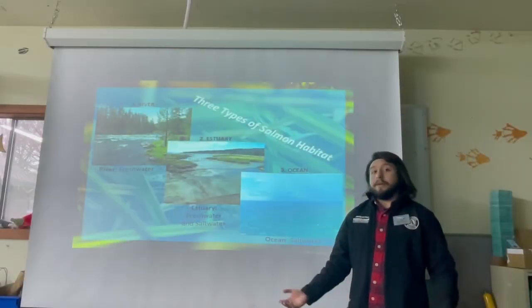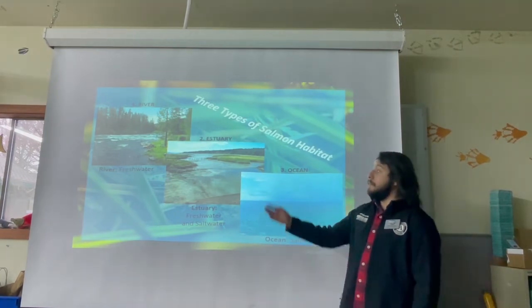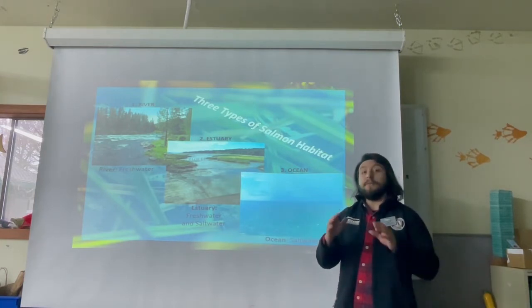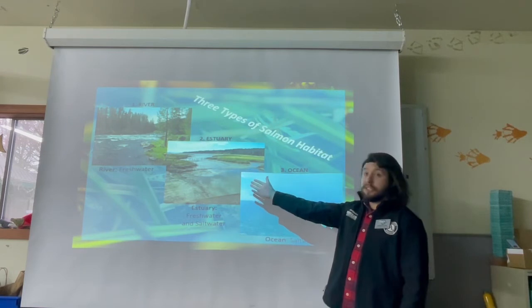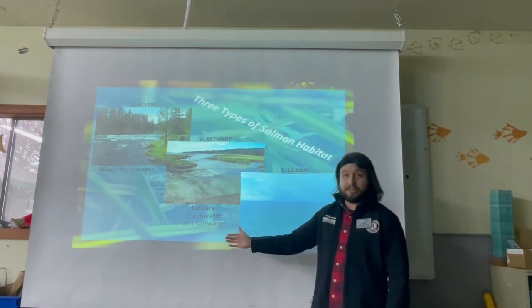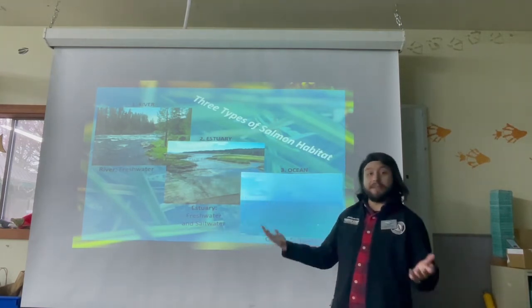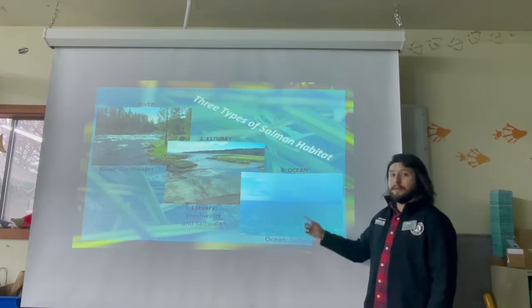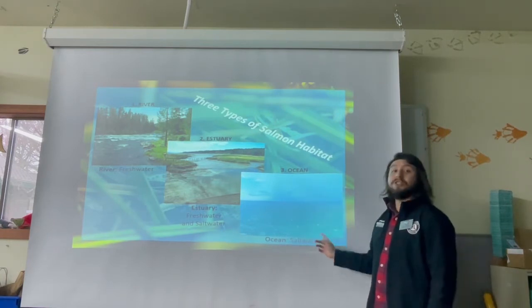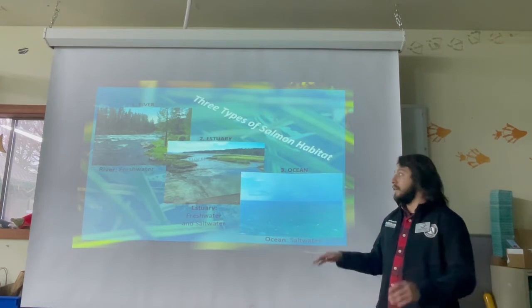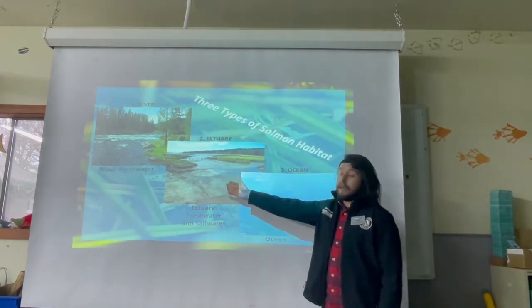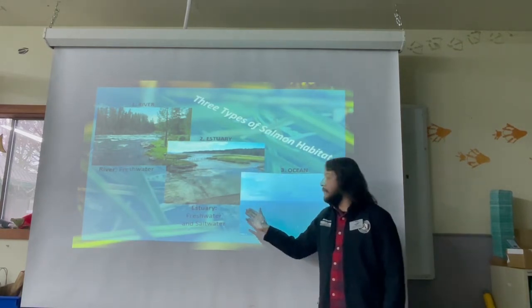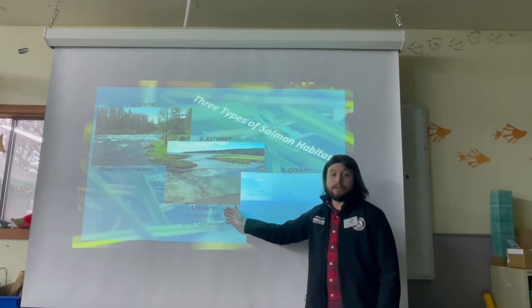Salmon utilize three different habitats. First, rivers — a freshwater system with low salinity, meaning low salt levels. Second, estuaries, which have a brackish system — a mix of fresh and salt water, since estuaries are the in-between section connecting the river and the ocean. Third, the ocean, which of course has a saltwater system. Each of these habitats is used by salmon at different stages of their life.